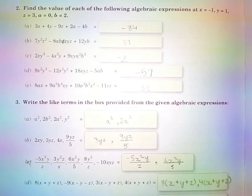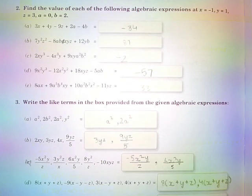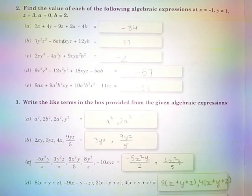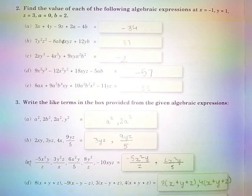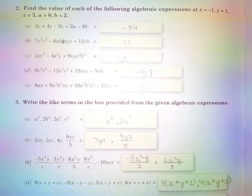Part C: 2xy³ − 4x³y + 9xya²b² is equal to −2. Part D: 9x²y³ − 12x²y² + 80xyz − 5abc is equal to −57.